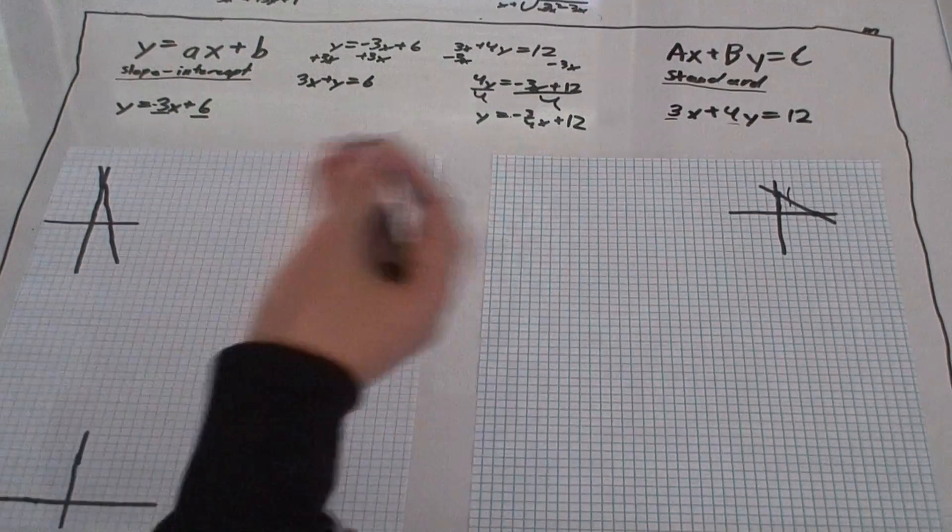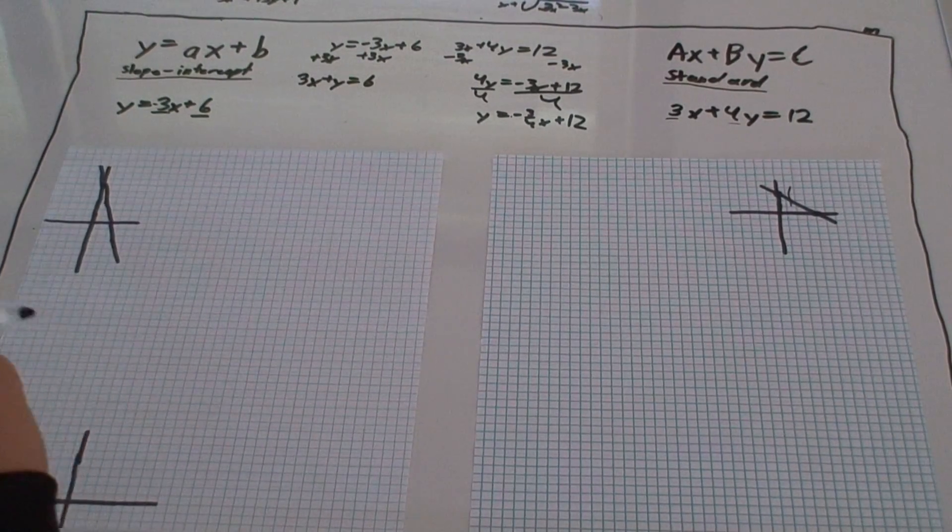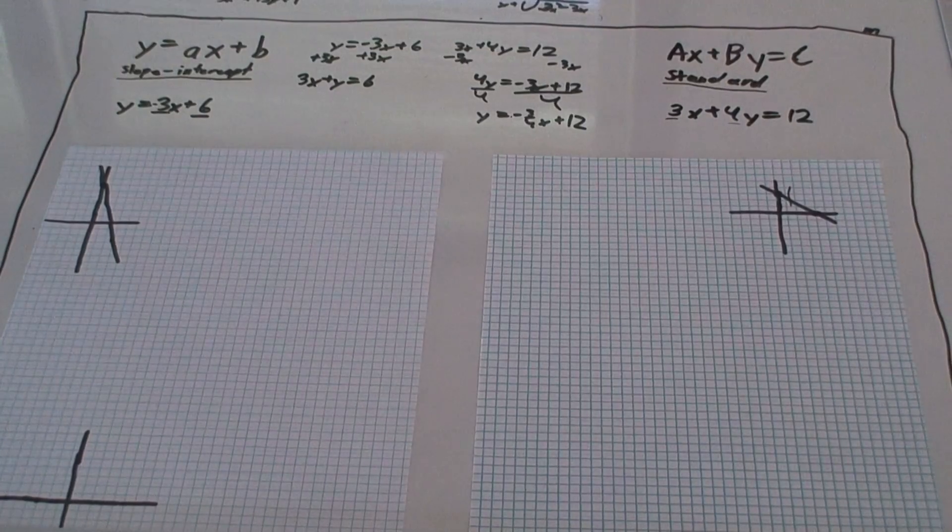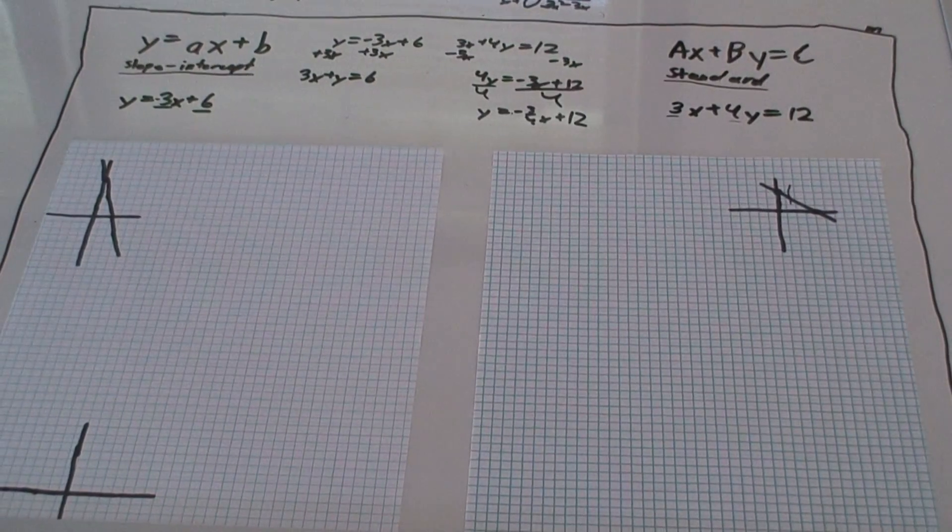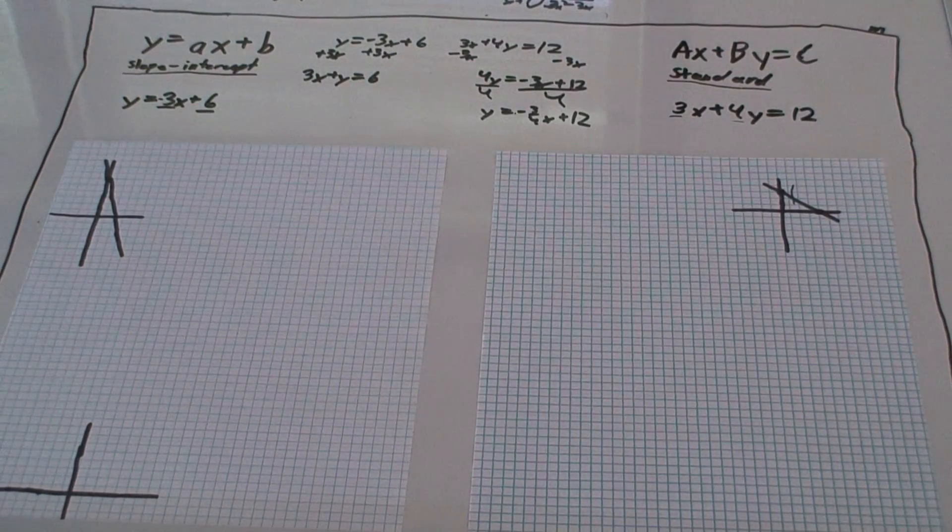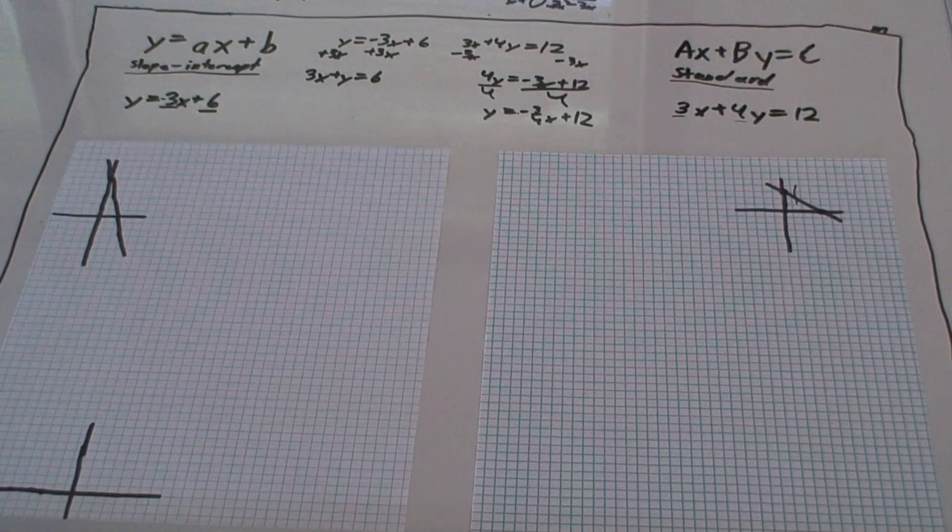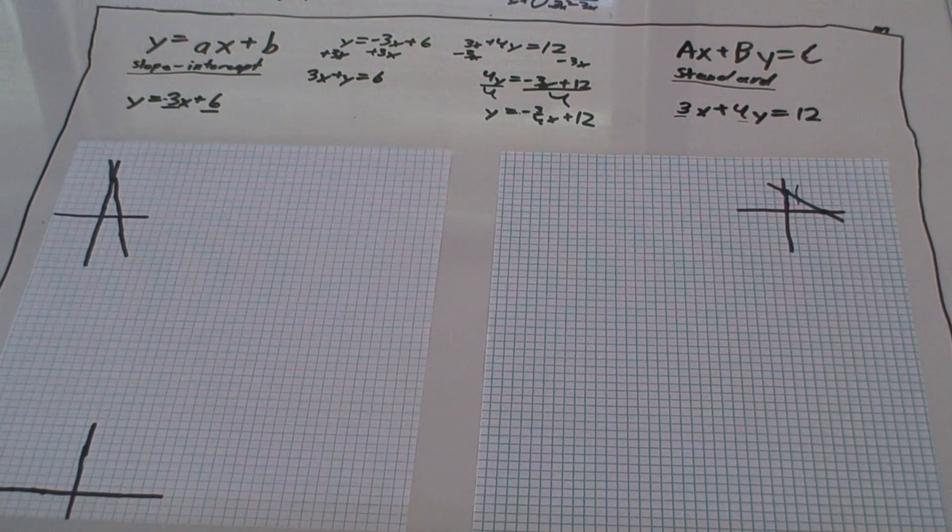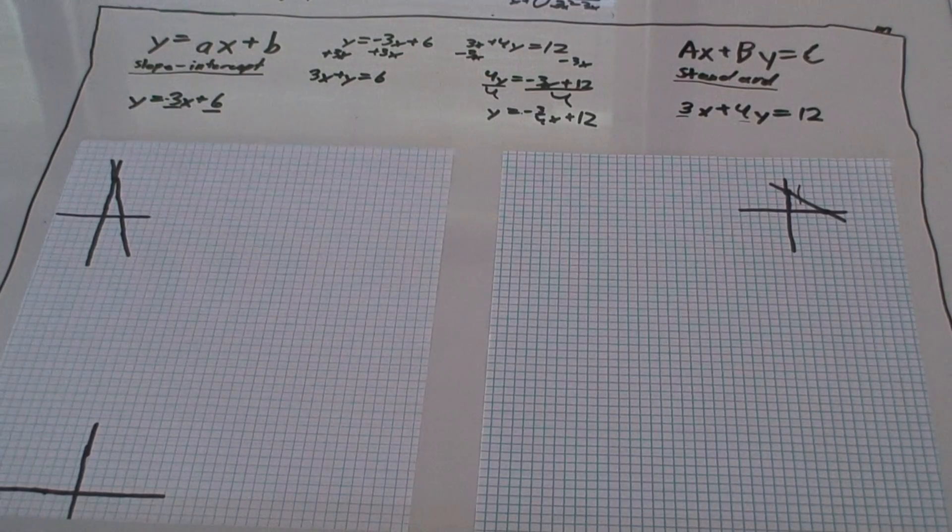And, that would just be in standard form. So, that's really all you need to know for slope. It's just the slope-intercept form and the standard form. How to get between them. How to graph them.